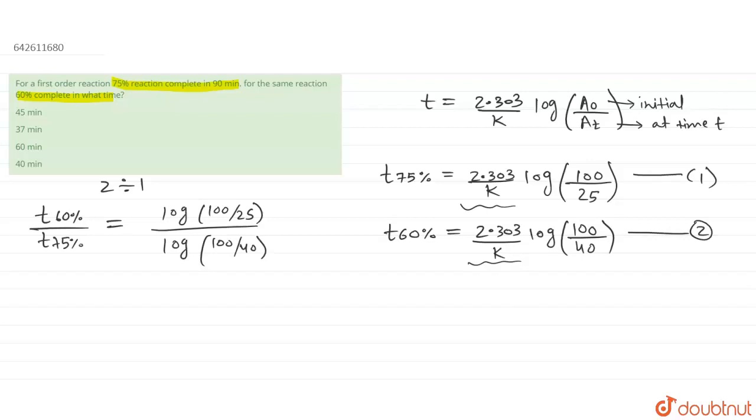We have to find the time for 60% completion, so we'll leave it as it is, and t₇₅% will go to that side which will be in multiplication. When we calculate this particular value...